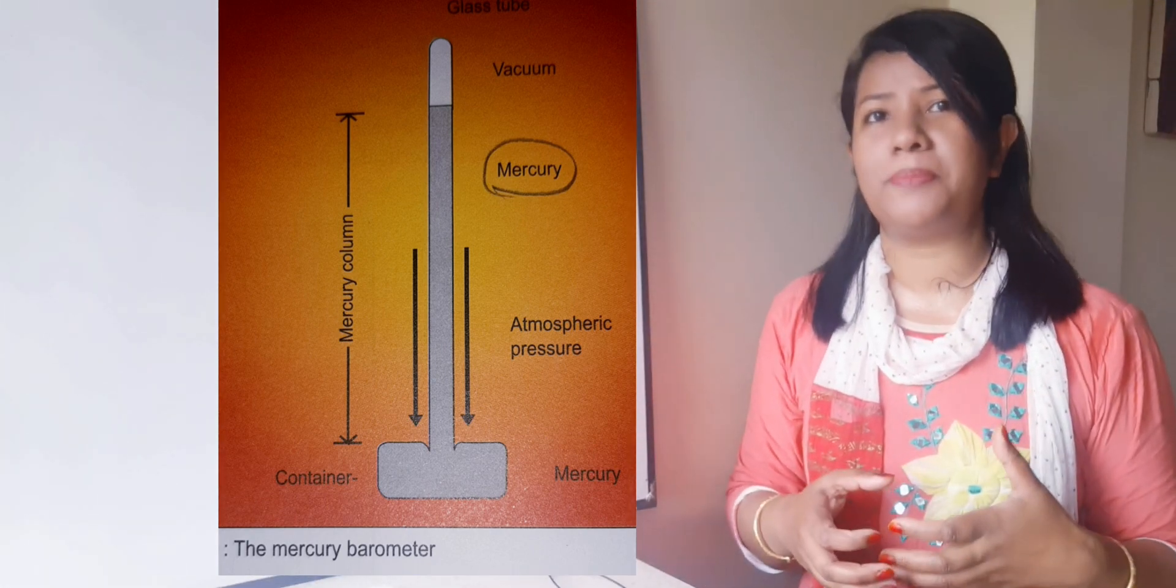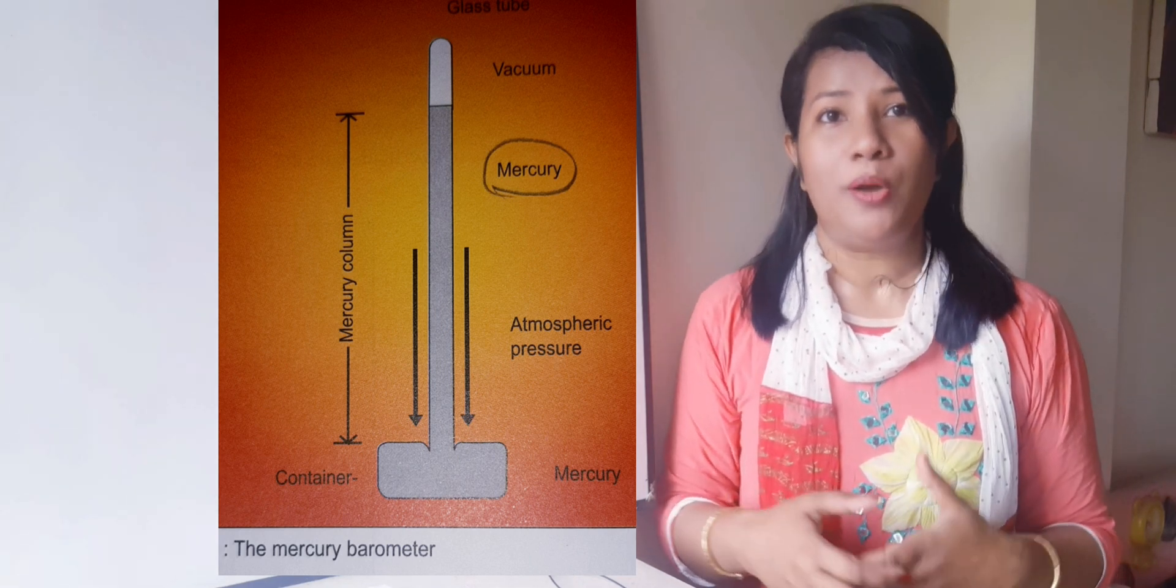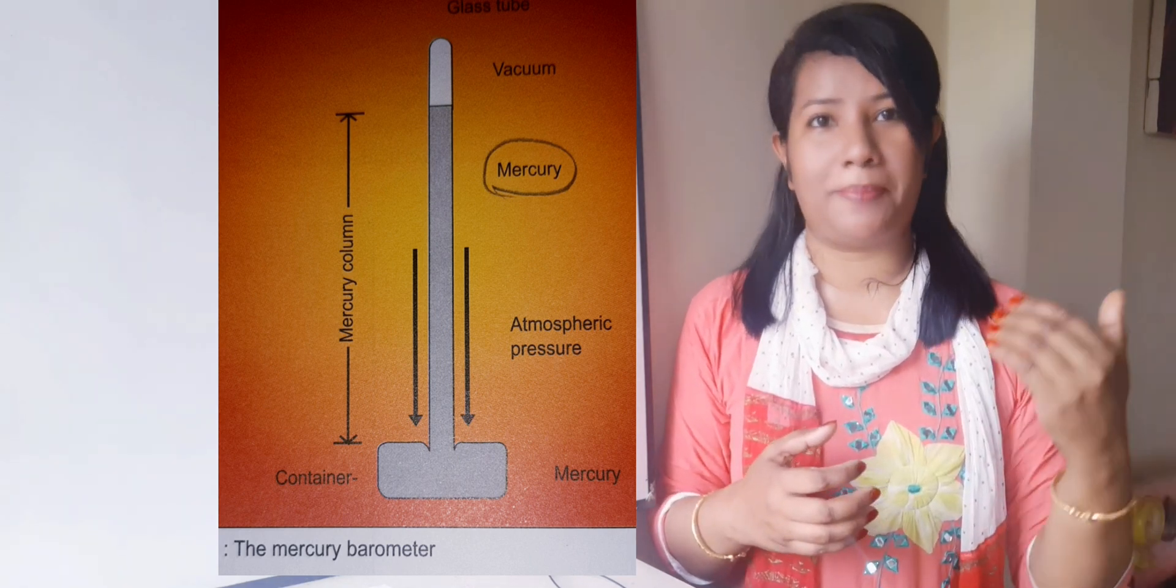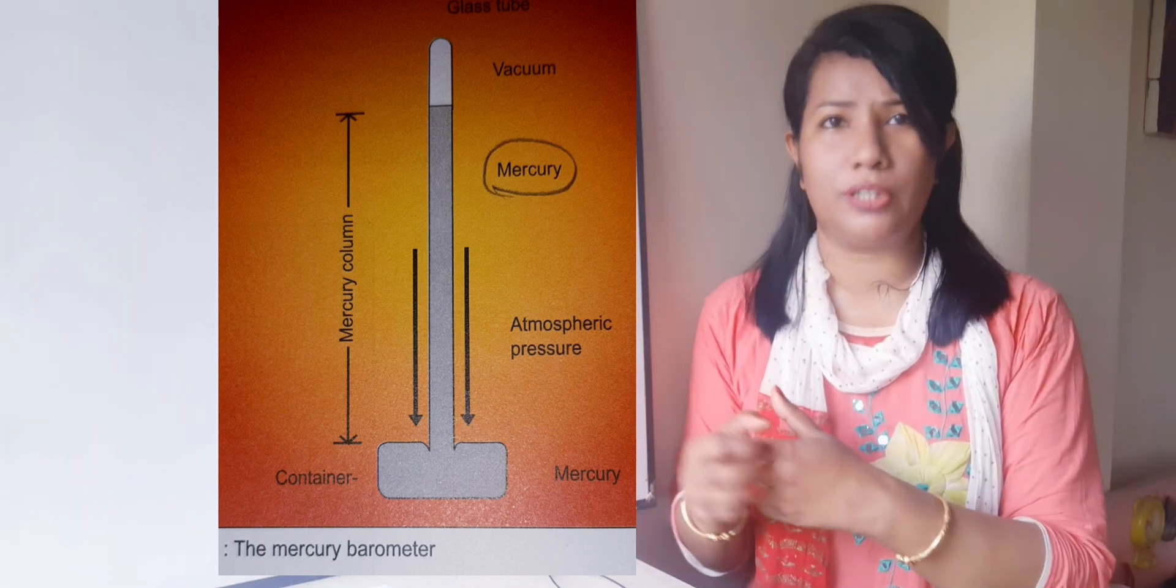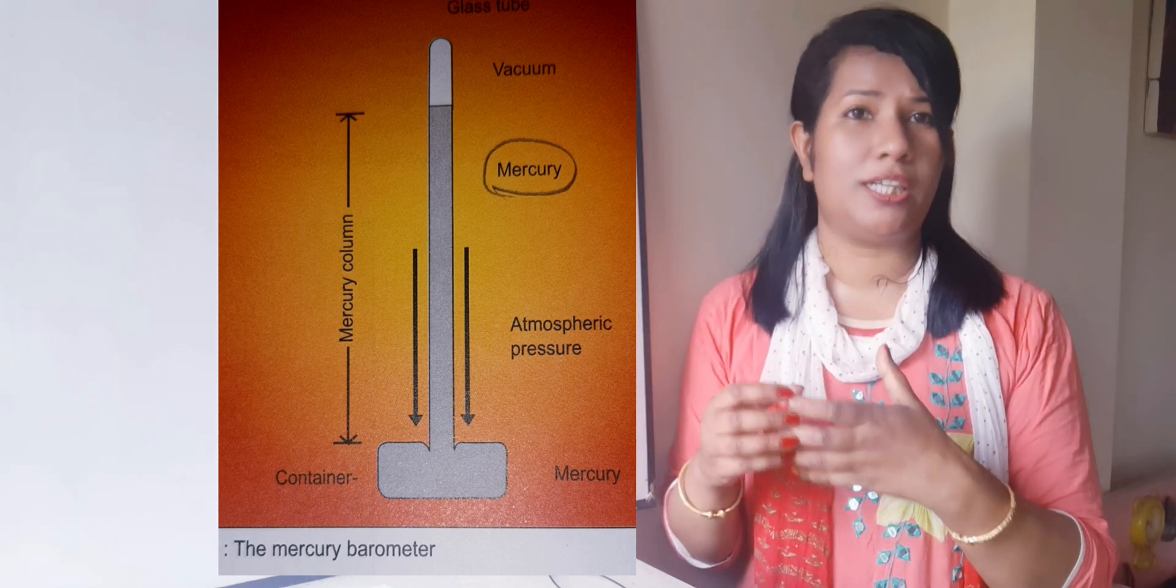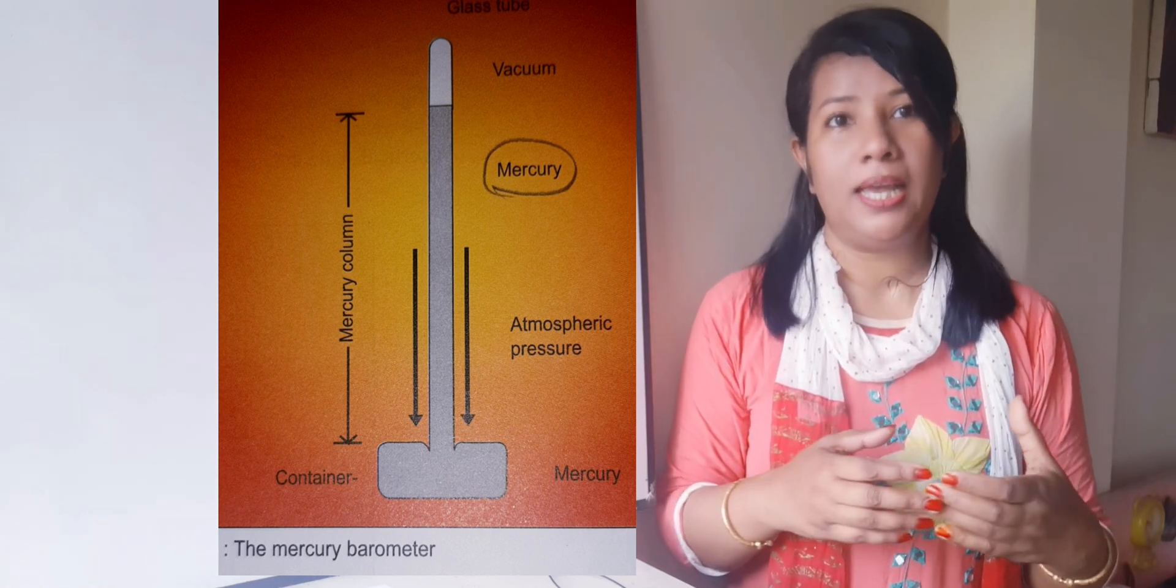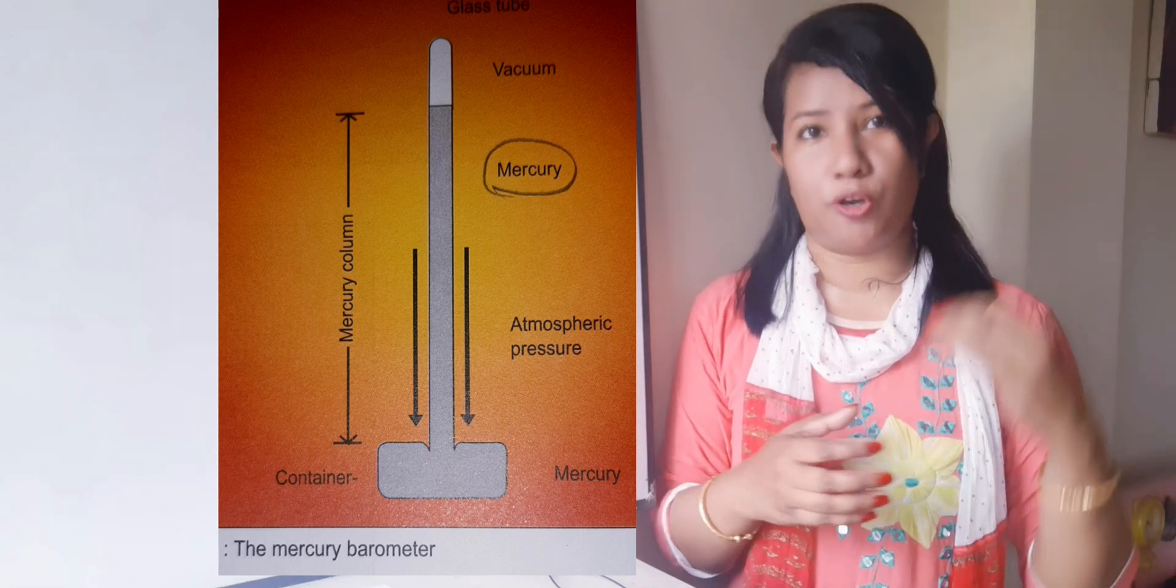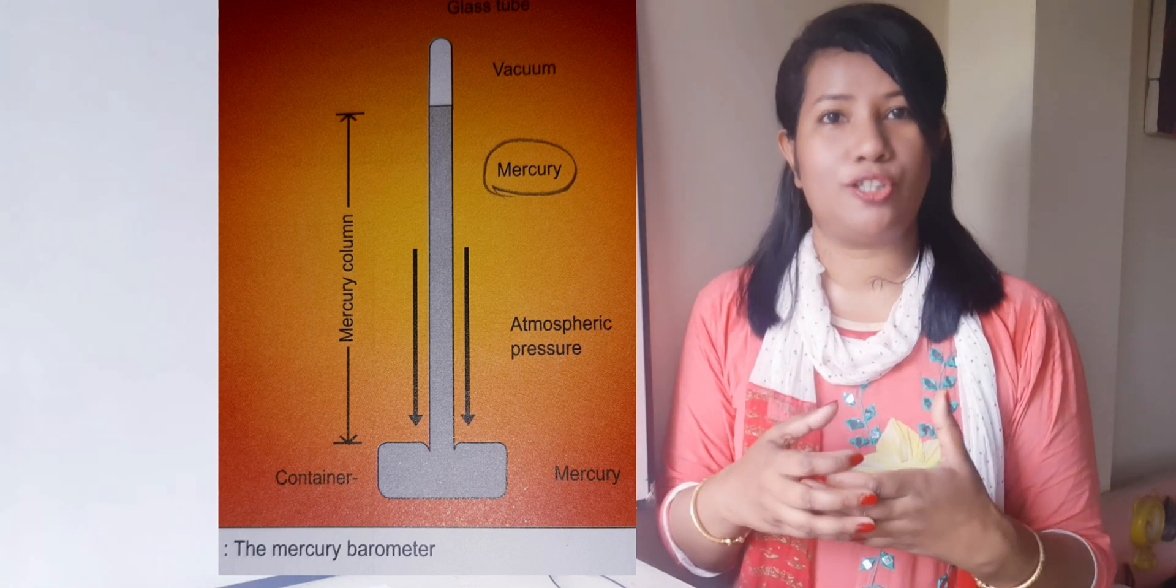So guys, now you tell me: how is pressure measured by using a mercury barometer? When the pressure is high, what happens? The air exerts a greater force on the mercury in the container, which then pushes up the mercury in the column. When the pressure is low, the mercury in the column drops. What gives the measurement of the air pressure? That is the height of this column of mercury.